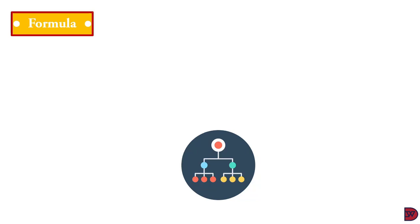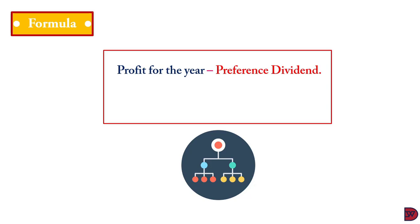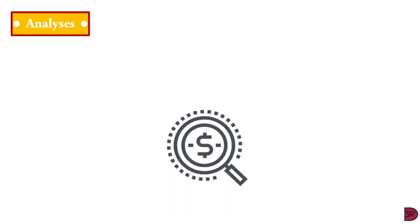For ordinary shareholders, because they are last in line for every payout, the formula is: profit for the year minus the preference dividend that was quoted, divided by the amount of ordinary dividend.